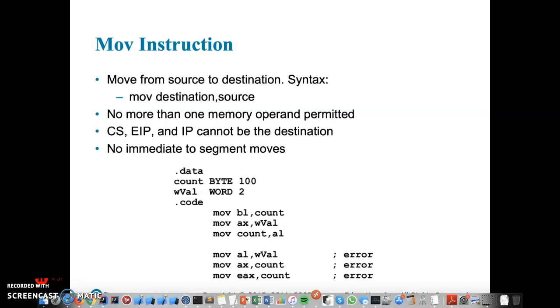In our second example, we're moving WVAL, which is a word, which is 16-bit. Its value is 2. And we're moving it to the AX, which is half of the EAX register. And that is also 16-bit. So we're moving from 16-bit to 16-bit, so that works just fine. Third example, we are moving from the ALow register, whatever is contained in there, into count. So we're moving from a register to a memory location. And since those have the same size, it works.